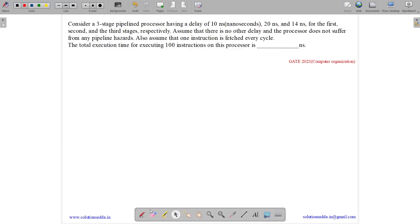This question belongs to computer organization subject and was asked in GATE CSE 2023. The question states, consider a 3 stage pipeline processor. So we have 3 stage pipeline.